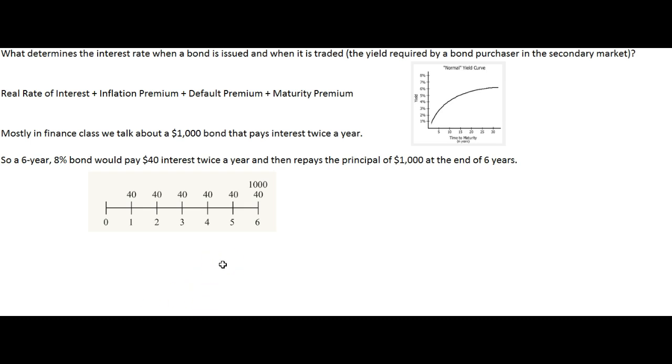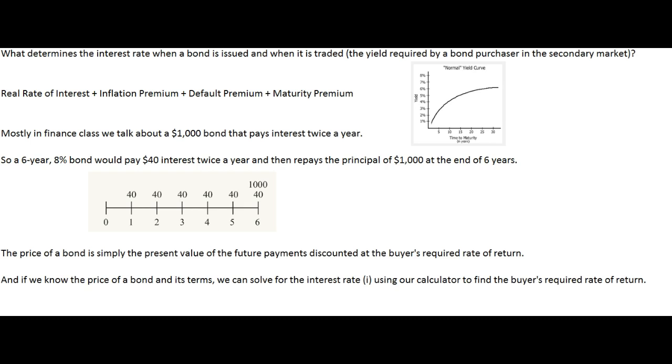For the most part in finance class, we'll talk about a bond that pays interest twice a year, and we usually talk about a typical bond being in the thousand dollar face amount. So if you had an eight percent bond that was outstanding for six years, it would pay forty dollars twice a year. Eight percent times a thousand is eighty, but since bonds typically pay interest twice a year, at the end of six months they pay half of that—that's forty—then the other half, another forty. The next year, forty, forty, etc., until they repay the principal at the end of six years. And the price of a bond is very simply the present value of the future cash flows discounted at the buyer's required rate of return. So if I wanted to earn eight percent, I would pay a thousand dollars for this bond. I would get forty, forty, forty, forty, forty—that's eight percent a year—and I'd get my thousand dollars back.